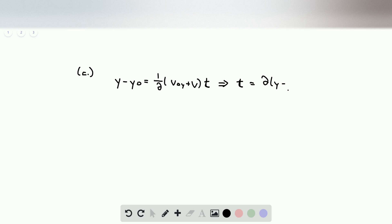And we get 2 times y minus y0 over v0y plus vy. Plugging in the values that we know, this gives us a value of 0.0187 seconds, which is our final answer.